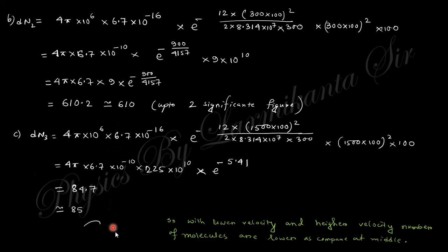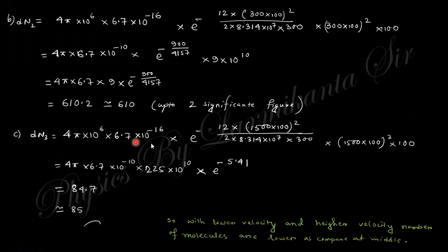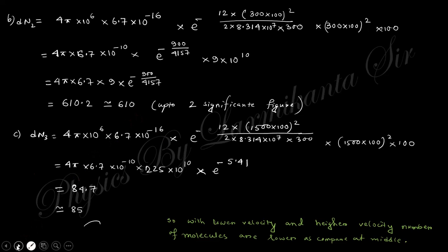Notice that at low velocity (100 m/s) the number of molecules is low; at high velocity (1500 m/s) it is also low; but in the middle velocity range (300 m/s) the number is highest at 610. This is the characteristic shape of the Maxwellian distribution curve.